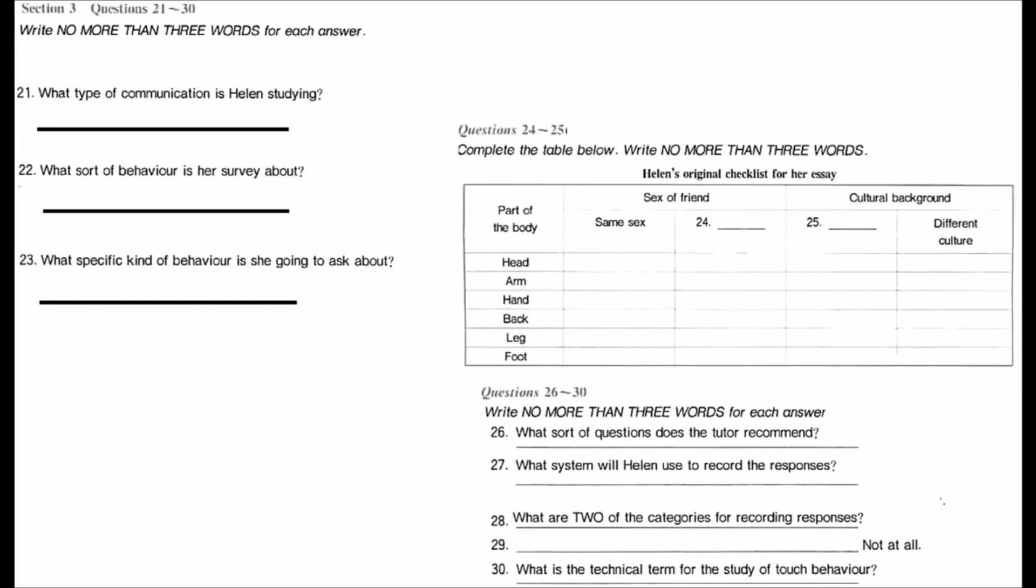It's about that survey you asked us to carry out about body language. Ah, yes. I asked you to investigate what sort of touching is permissible between friends of the same sex and friends of the opposite sex. That's it. And then you wanted us to go on to compare the answers we obtained from people from our own culture with the answers of people from other cultures. Well, that shouldn't be too difficult. There are students here from dozens of cultures including Asia and the Middle East. Go and ask them.